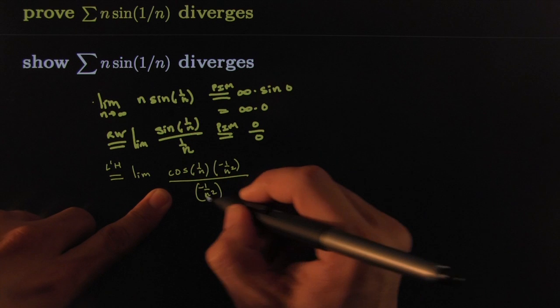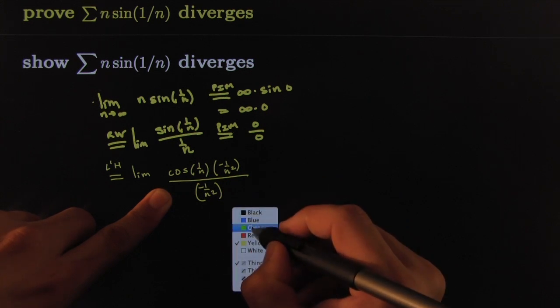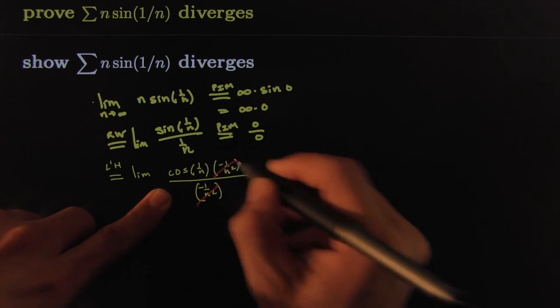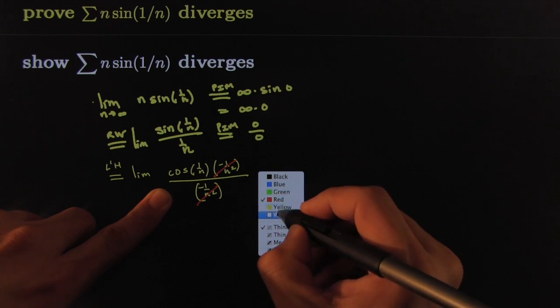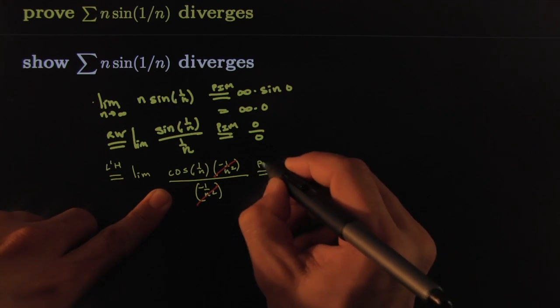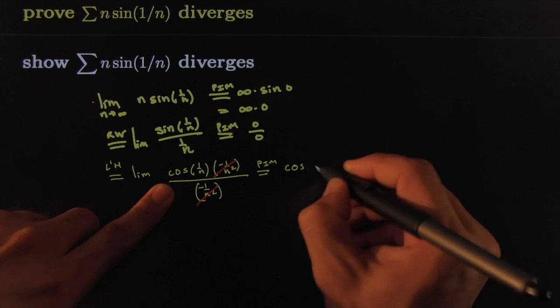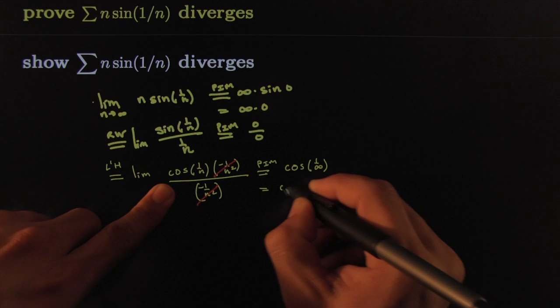And then this cancels nicely—let's use a little space right here—cancels nicely, and now we can try the plug-in method again. And so that would be cosine of one over infinity, which of course would be cosine